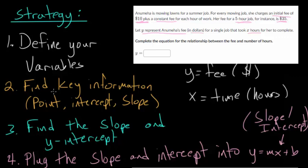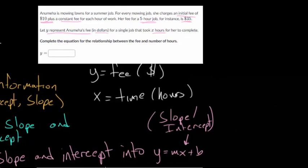So the next step is to find the key information. So we're looking at the numbers here. So the second sentence, for every mowing job, she charges an initial fee of $10. So that means no matter how many hours are worked, she's immediately charging $10. So in other words, when x is zero, when no time has passed, the fee y is $10. And that's our y-intercept.